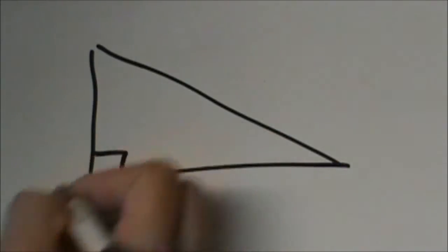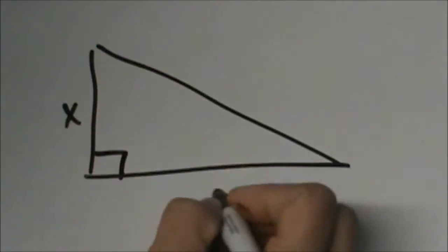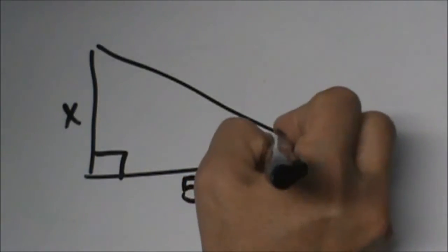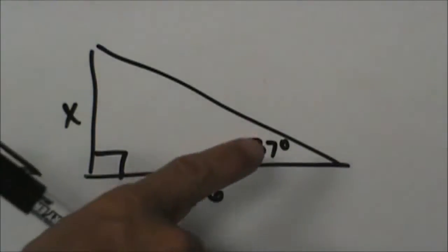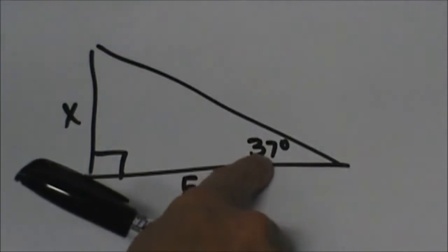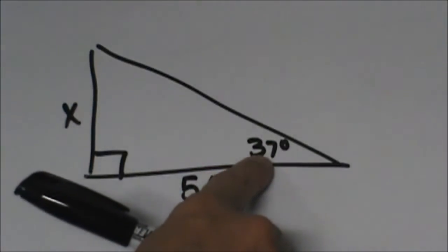We have a 90 degree angle here, a side x, 56, and then an angle that measures 37 degrees. Is this a forward or a backwards problem? Hopefully you said forward because we have the angle. When you have the angle it is a forward problem.